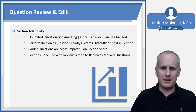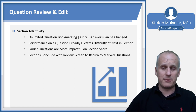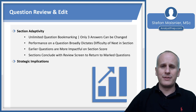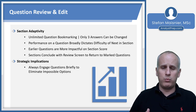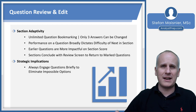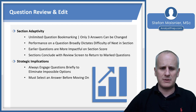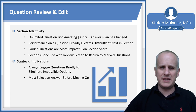You really want to make sure you're paying attention to earlier questions a little more specifically. When you get to the end of a section, you'll see a review screen that will allow you to return to your marked questions — or any question — and will show you which questions you did mark. Strategically, you must always engage each question briefly to eliminate impossible options; you can't move forward without making a selection. Try not to blindly guess, because you only have three answers that can be changed within a section.